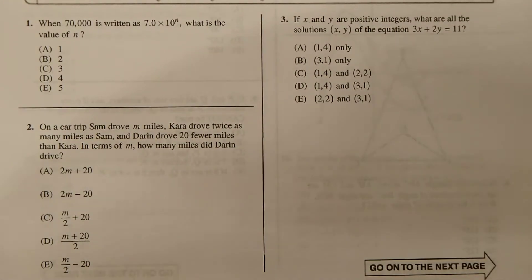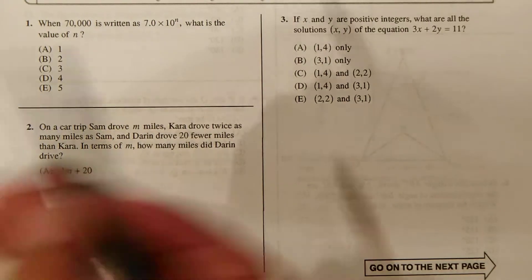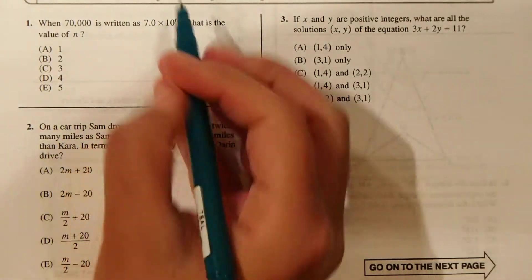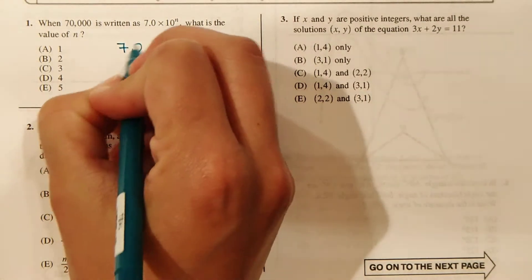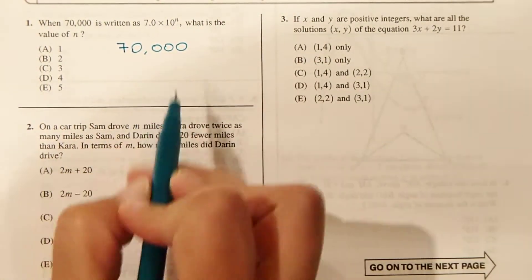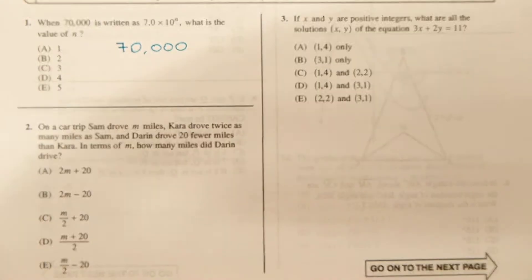So let's start with number 1. When 70,000 is written as 7.0 times 10 to the n, what is the value of n? So we just need to convert 70,000 back into exponential form. So I'm going to write 70,000 and we need to bring the decimal place back enough times that it's just one digit.